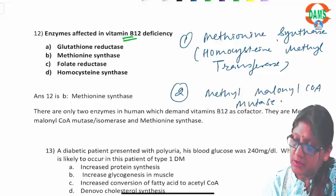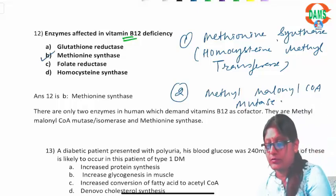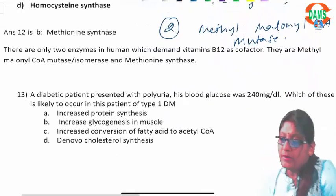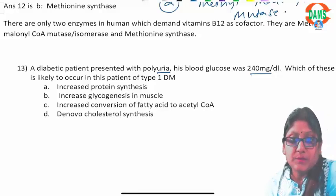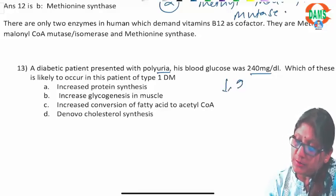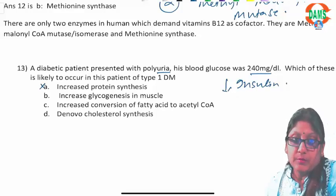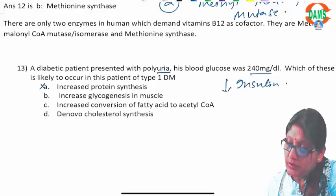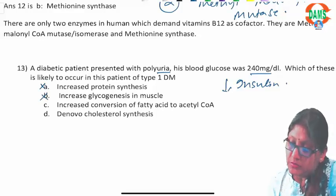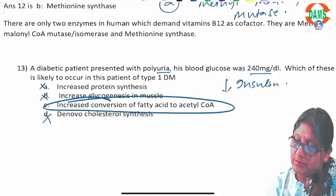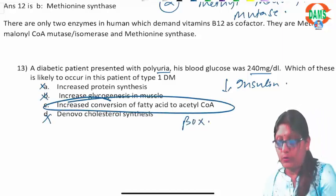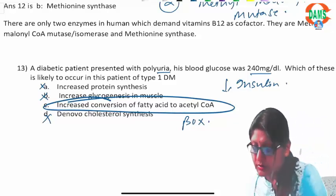Question thirteen: a diabetic patient with polyuria has high blood glucose. In diabetes, there is a lack of insulin. Protein synthesis will not increase because it requires insulin. Glycogenesis is also anabolic and needs insulin. Cholesterol synthesis also needs insulin. With lack of insulin, there will be increased fatty acid beta-oxidation producing acetyl-CoA. The answer to question 13 is C.